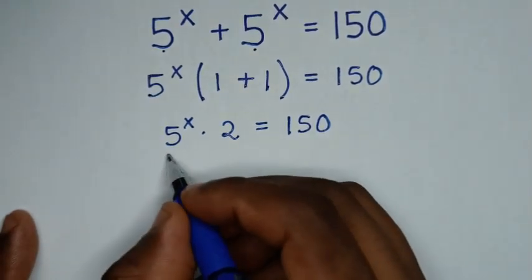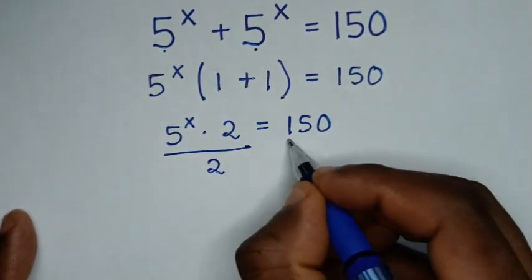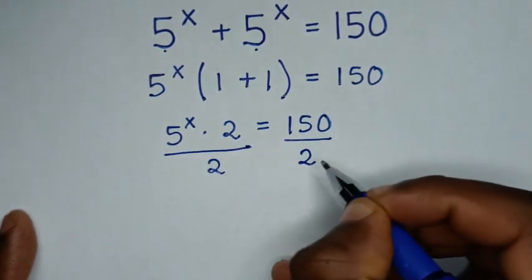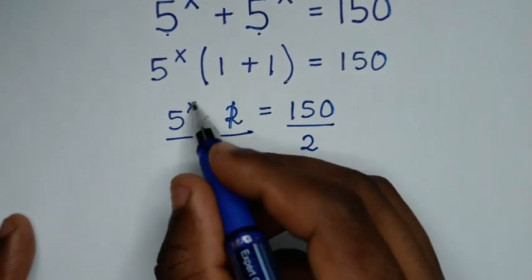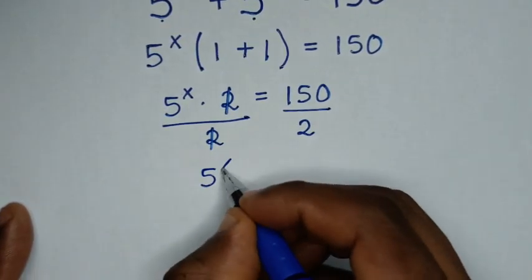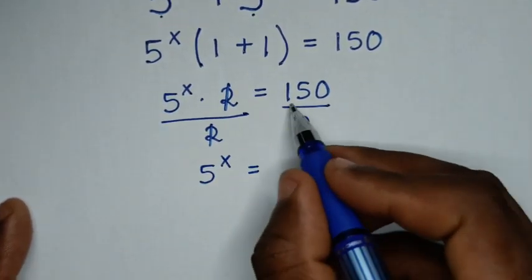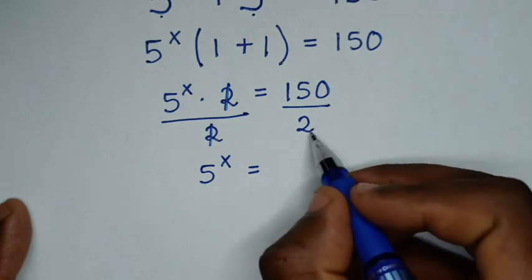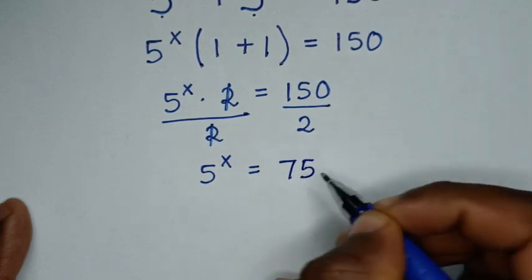Then we'll divide by 2 on both sides, so this 2 and this 2 will cancel. Then it will be 5 power x is equal to 150 divided by 2, which is 75.